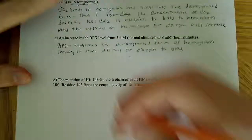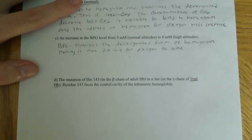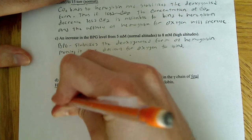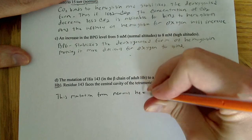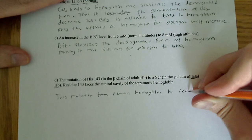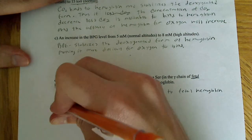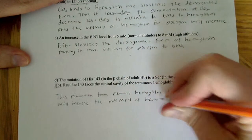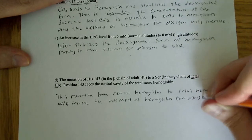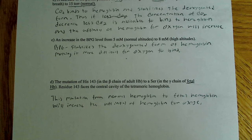The mutation from normal adult hemoglobin — where histidine 143 in the beta chain is changed to serine — corresponds to fetal hemoglobin. This mutation will increase the affinity of hemoglobin for oxygen. This change from histidine to serine at that residue increases the O2 affinity of hemoglobin.